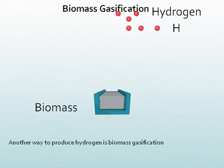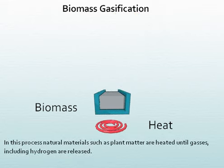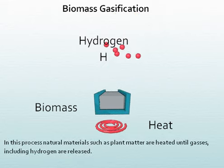Another way to produce hydrogen is biomass gasification. In this process, natural materials such as plant matter are heated until gases including hydrogen are released.